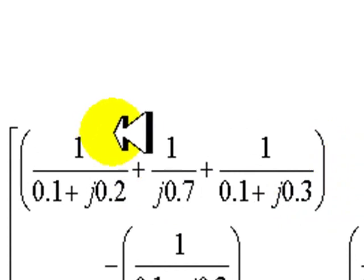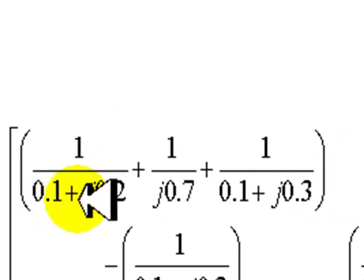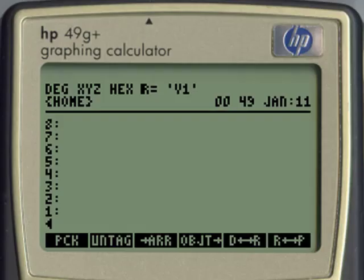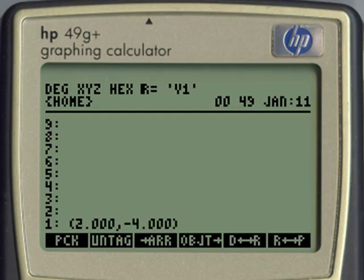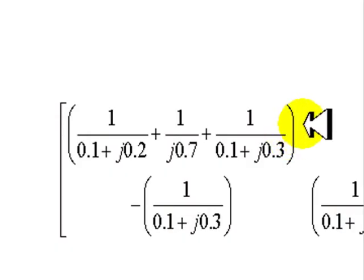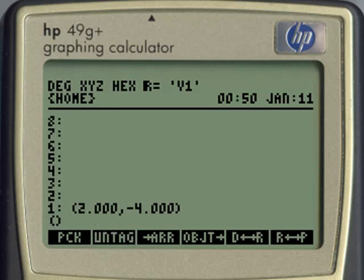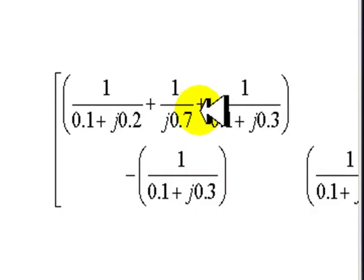First let me compute this coefficient inverse of 0.1 plus j0.2. I enter in the calculator round parenthesis 0.1 space 0.2 and right then and there I click on inverse and we have the first term of this operation. And next the inverse of 0 plus j0.7. We go to the calculator round parenthesis 0.0 space 0.7 inverse. And now we have those two terms. We might as well add them together.